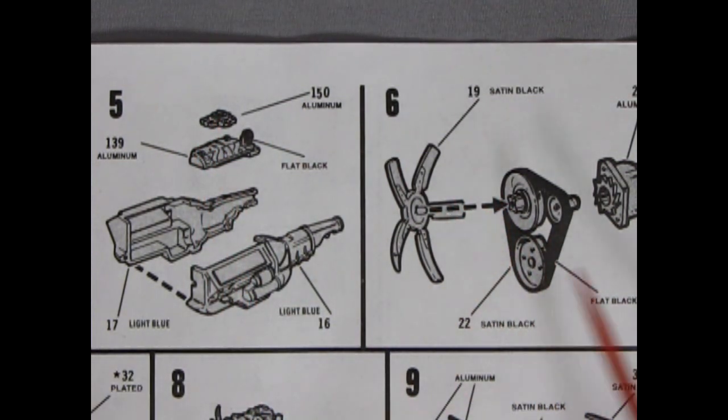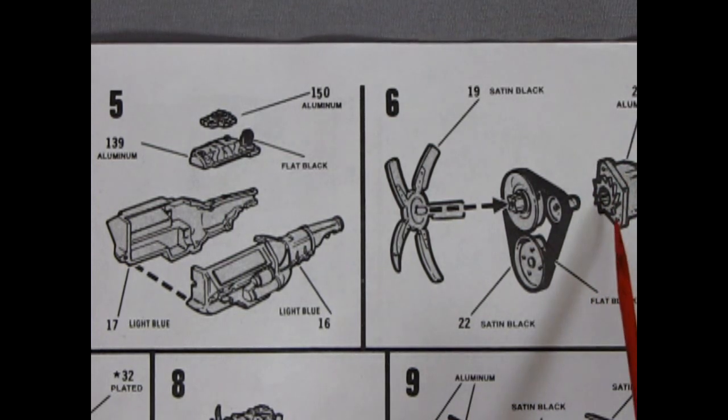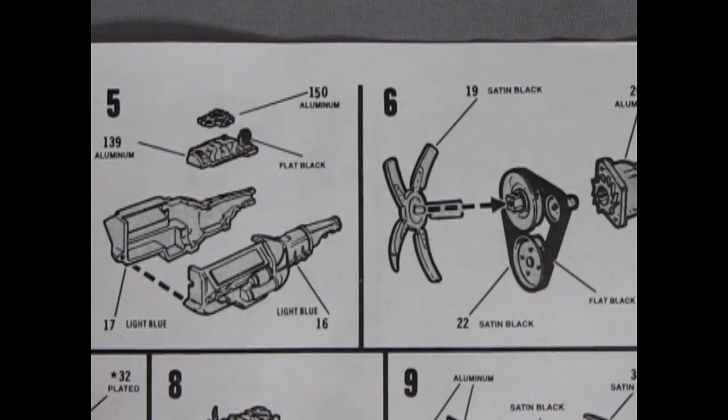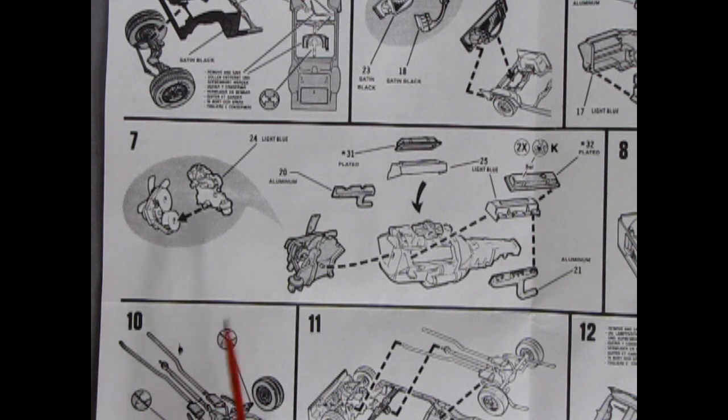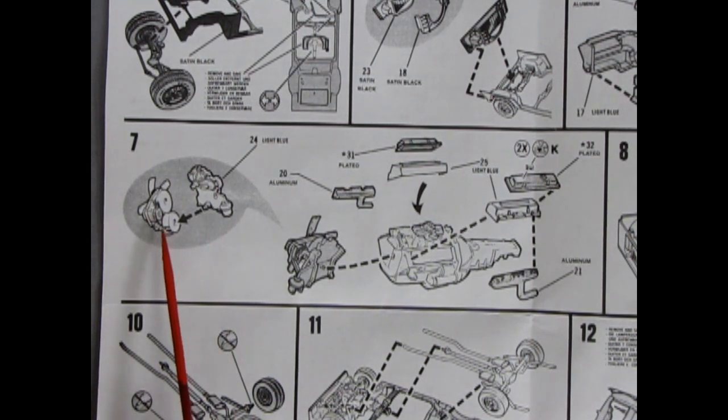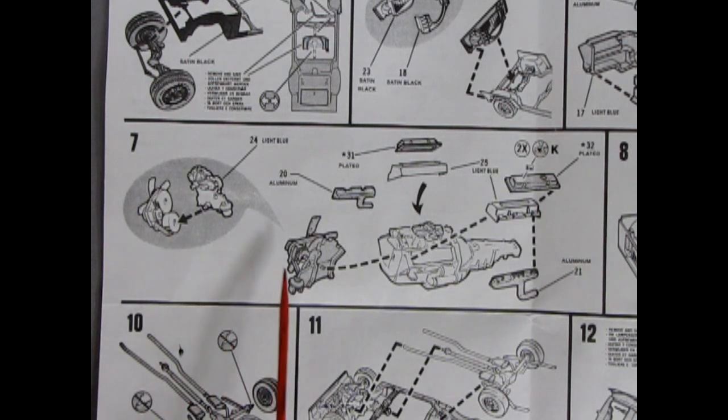Then you got your intake manifold and your carburetor. Both of these are called for aluminum. Then you got your fan and your fan belt and your alternator which is an aluminum one. You got to paint this, it's not chrome. So there's our panels. Now we have panel seven which is quite longer.